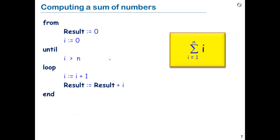What is the variant in the sum example? It's actually very simple and very similar to the previous case: n minus i. And again, we must ensure it never becomes negative, so the variant is n - i + 1. It's not surprising it's similar to the previous case, because in both cases we had a loop for which the number of iterations is fixed and known in advance — count in the first case and n in the second. Not all loops have a fixed number of iterations, and variants in later examples will be more subtle.